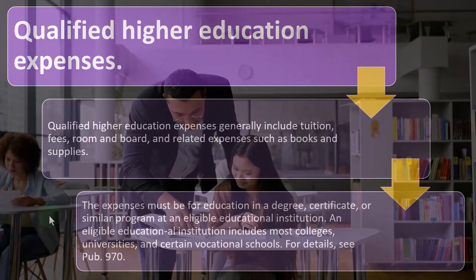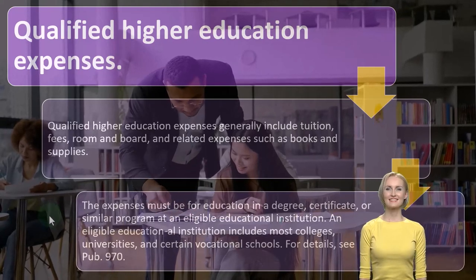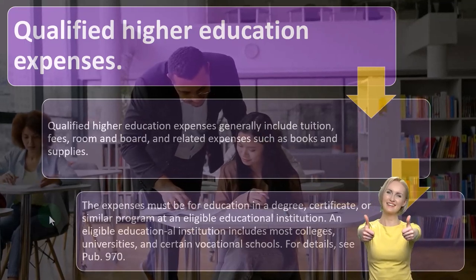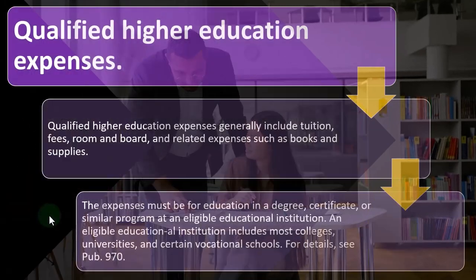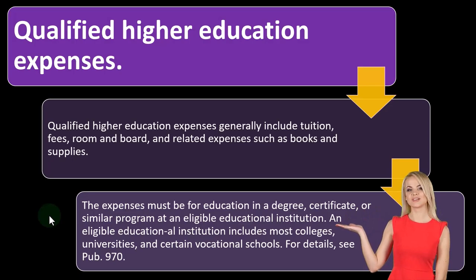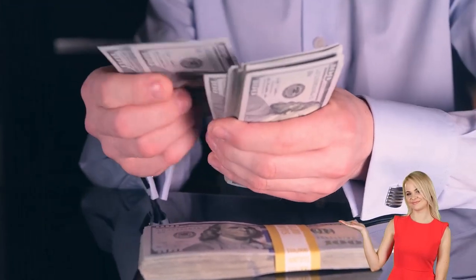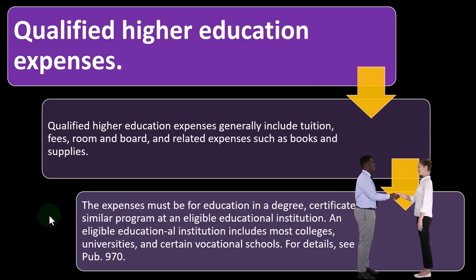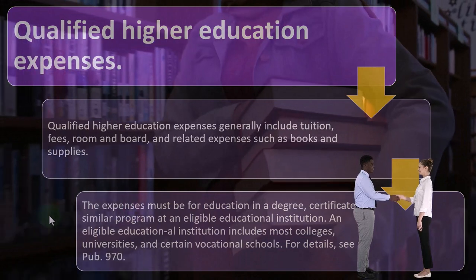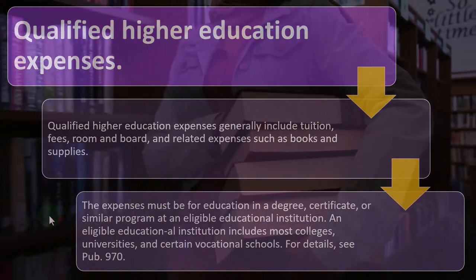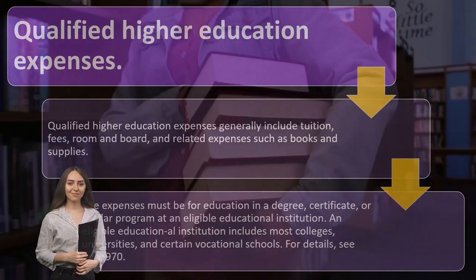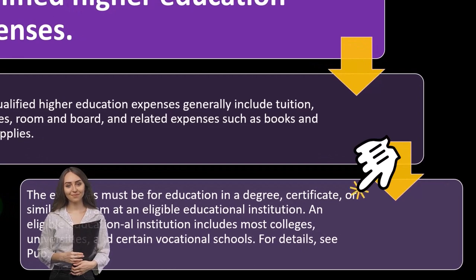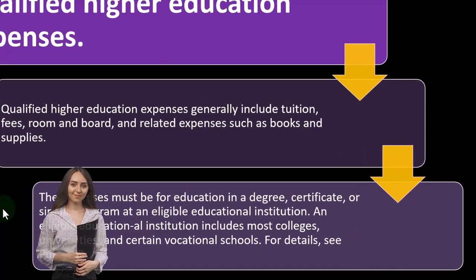Sometimes those things aren't all the same, so you have to make sure you're applying what you're spending the money on to the proper area for the education component you're looking at — whether that's the student loan interest deduction or the Hope and Lifetime learning credits. The expenses must be for education in a degree, certificate, or similar program at an eligible educational institution. Eligible educational institutions include most colleges, universities, and certain vocational schools. See Publication 970 for detail.